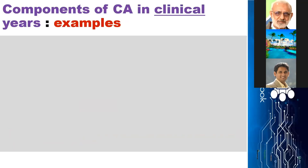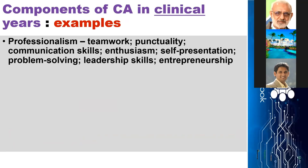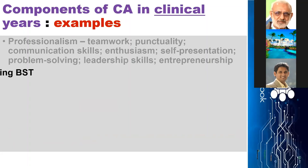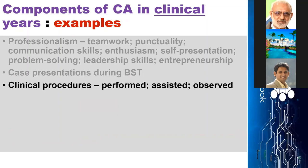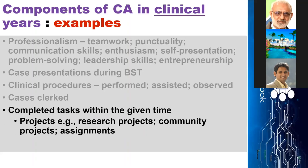Here are examples of components of continuous assessment in clinical years. Professionalism includes teamwork, punctuality, communication skills, enthusiasm, self-presentation, problem-solving, leadership skills, and entrepreneurship. Case presentations during BST. It also includes clinical procedures — whether performed, assisted, and observed. Cases clocked, and completed tasks within the given time, such as research projects, community projects, assignments, and portfolios.